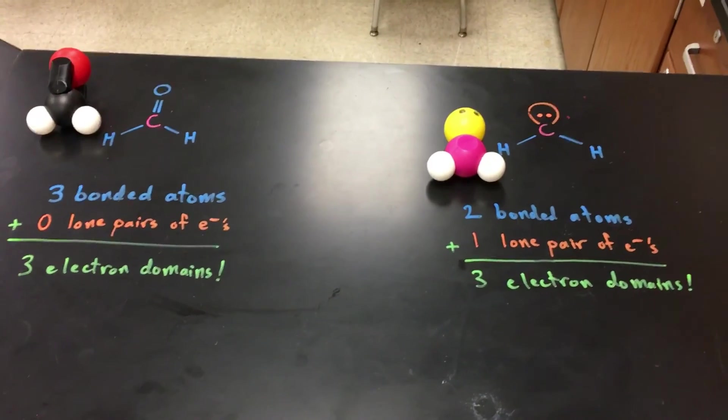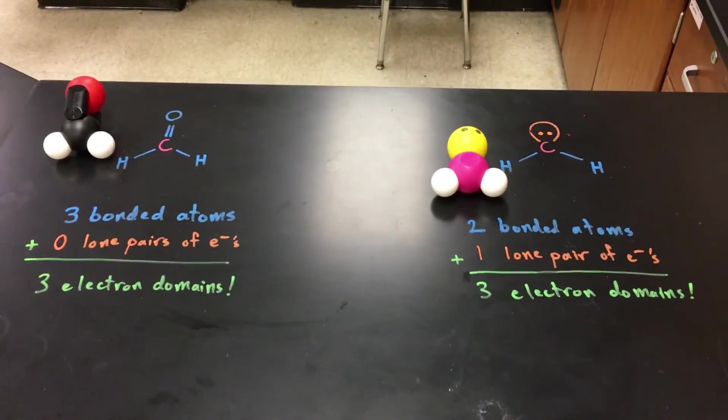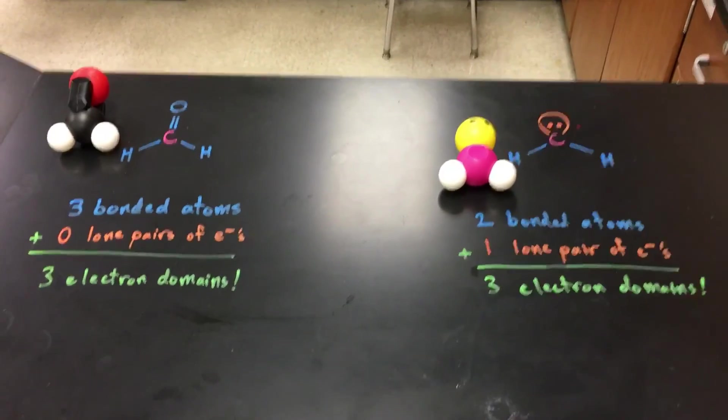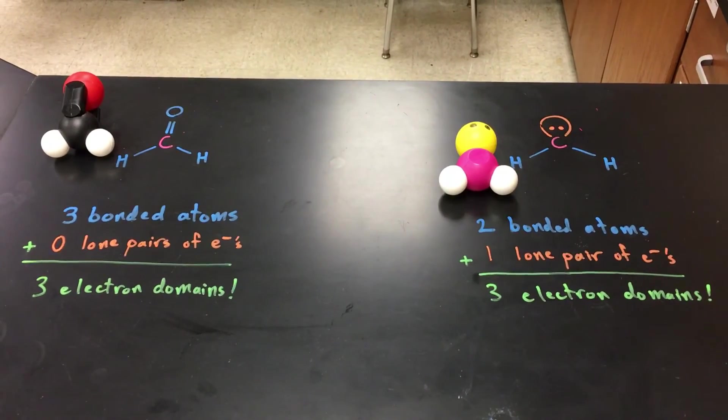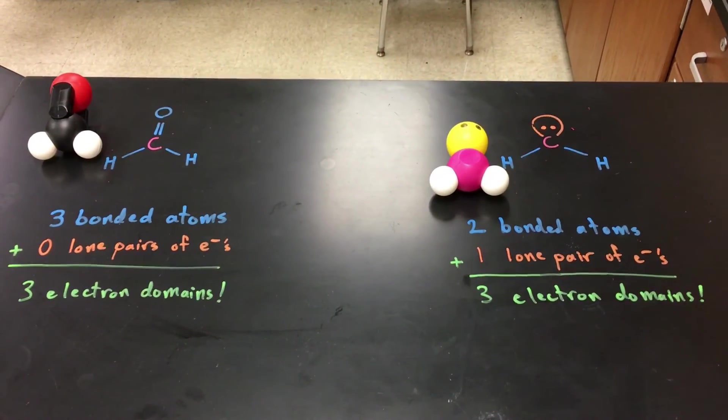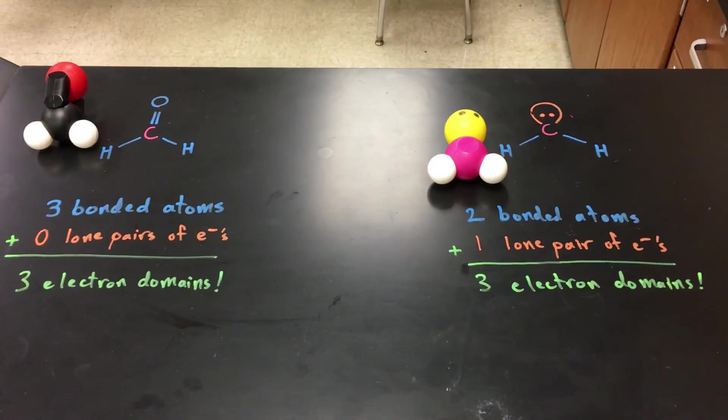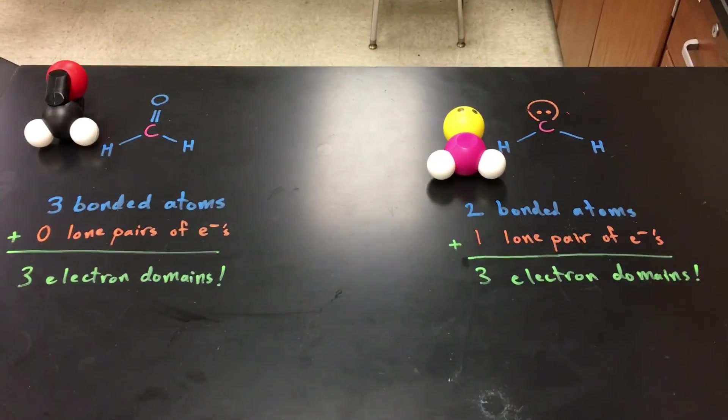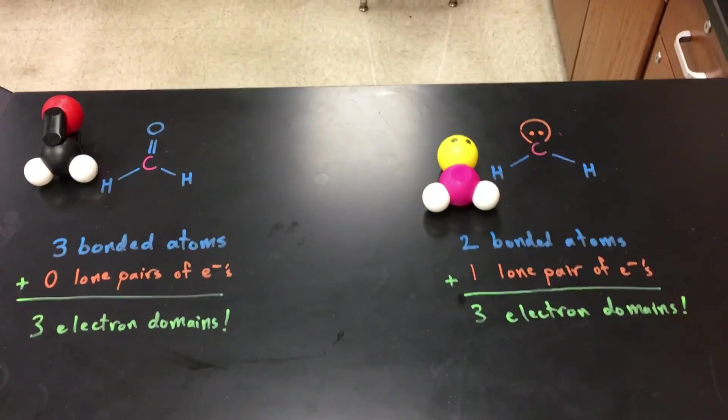Okay so this is how we can predict what the shape of a molecule is going to be. You don't always need a model kit around for you to kind of figure it out. If we can figure out how many bonded atoms or lone pairs of electrons are there, we can make a pretty good guess of how those are going to arrange around each other. What we usually end up caring about is where the atoms are at, but in order to know where the atoms are at we need to know where those lone pairs of electrons are.